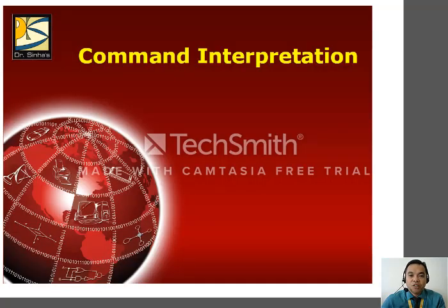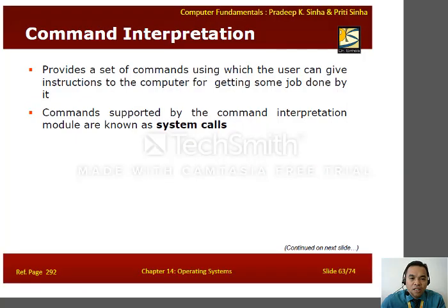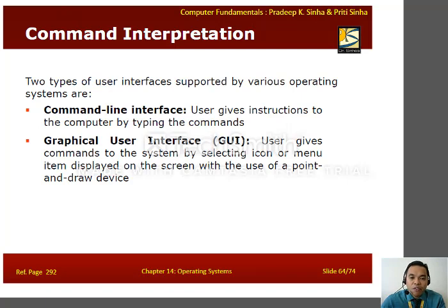Another function of an operating system is command interpretation. It provides a set of commands through which the user can give instructions to the computer, and these commands are known as system calls. There are two types of user interfaces: command line interface, where the user types commands, and graphical user interface (GUI), where the user gives commands by selecting icons and menu items on the screen using a point-and-draw device.